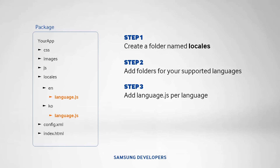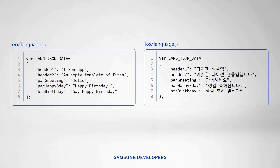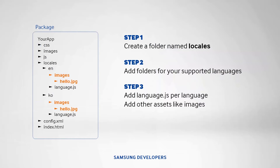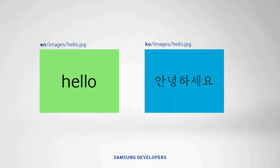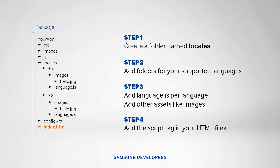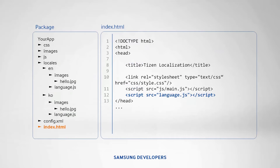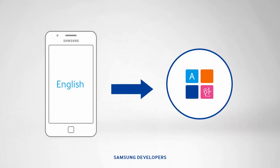It's important to remember that Tizen uses JSON to keep the translations. If you open both language.js files, you'll see that they have the same key-value pairs. The only difference is that one file's values are in English and the other is in Korean. We also have an image called hello.jpg in the images folder for both languages, each natively targeted to its user. The last item is the script tag — add it with the source pointing to language.js. Tizen takes care of choosing which set of assets to load depending on the user's device language.